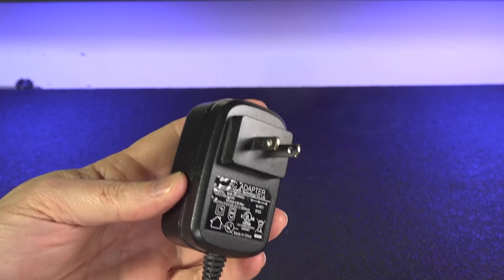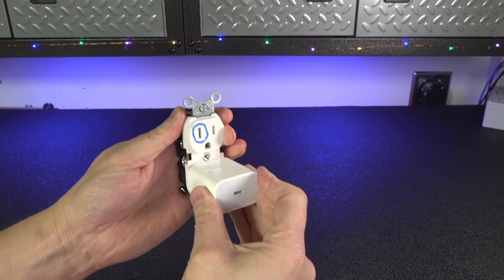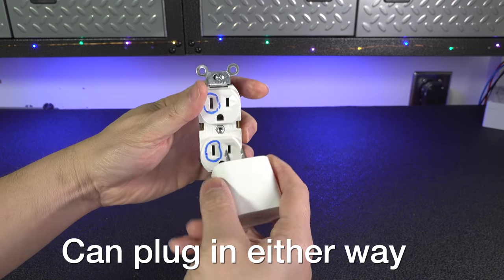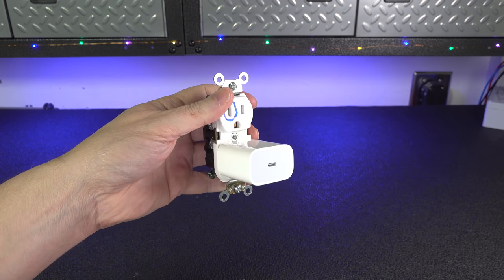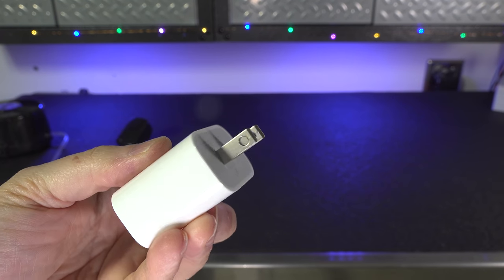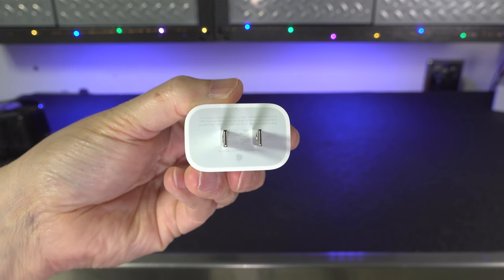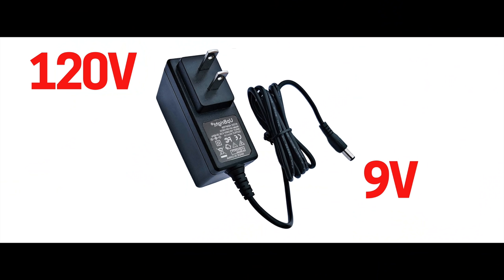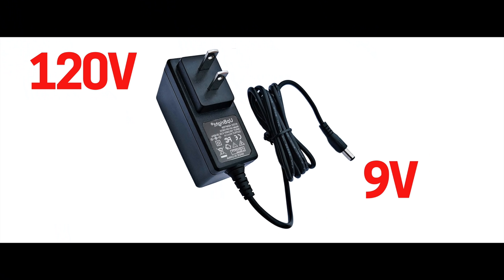But then what about things like these AC adapters and iPhone chargers? They don't have that ground prong and the two prongs that are there are exactly the same size. And it's actually okay for a couple of reasons. First, unlike appliances, these are made of plastic and you're not going to have metal on the outside that could give you a shock. And second, chargers reduce the amount of voltage coming out of your wall outlet to a much safer level. So putting a polarized plug on these type of devices wouldn't actually give you any benefit.